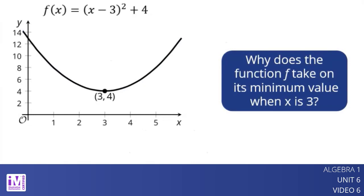Why does the function f take on its minimum value when x is 3? Here is one way to explain it. Squaring any number that is not 0 results in a positive number. This means that when x is not equal to 3, the function value will always be greater than when x equals 3.